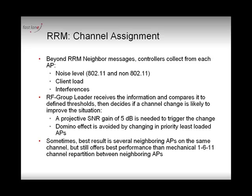The channel assignment relies on the RRM messages. You need to have this exchange between the access points for the channel assignment algorithm to be triggered. As you receive the RRM message and forward this information to your controller, you provide information such as the noise level heard from the environment — this can tell your controller if non-wireless devices may be interfering with your signal. You'll also send the client load contained in the RRM message, which is the neighboring access point client load, so you'll know how many clients are already connected on the other controller. You also give the interference label — that is, signal coming from other access points, specifically 802.11 noise from access points not belonging to your RF group. All this information is collected through the RRM information message and sent to the controller, the RF group leader.